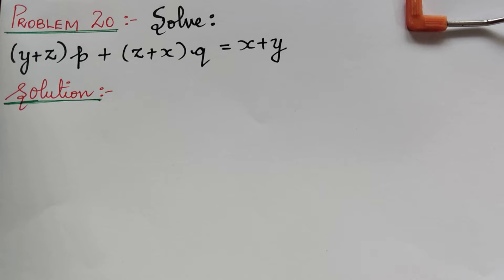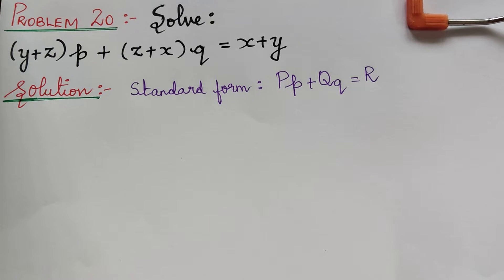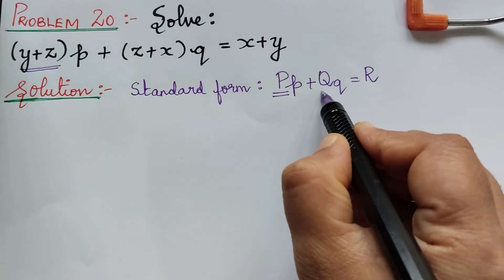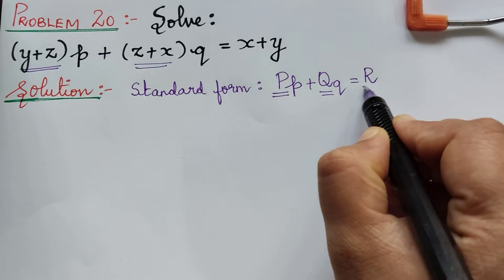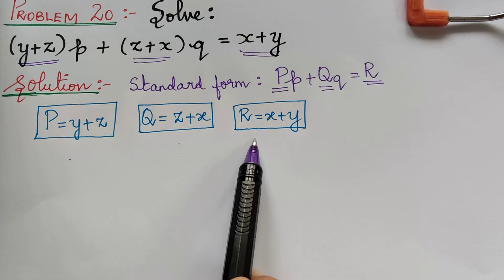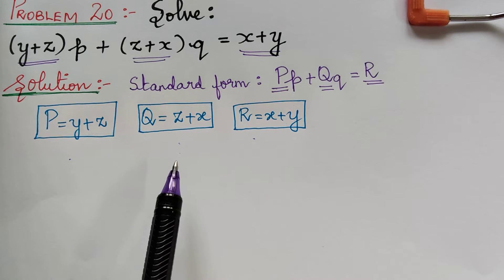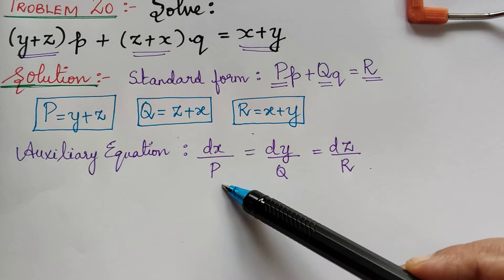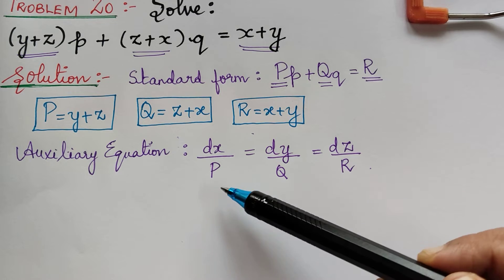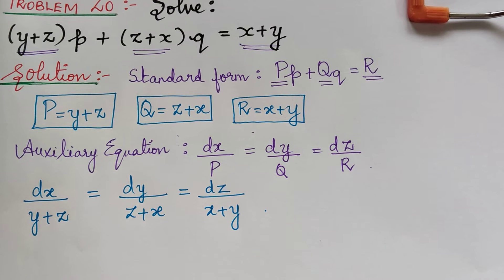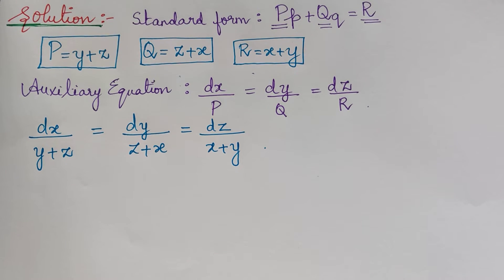As the first step, let us write the standard equation of the Lagrange's type. Comparing with this standard form, we observe that capital P is equal to Y plus Z, capital Q is equal to Z plus X, and capital R is equal to X plus Y. We shall now write the auxiliary equation: dx by P equal to dy by Q equal to dz by R. Substituting the values of P, Q, and R gives us the auxiliary equation.